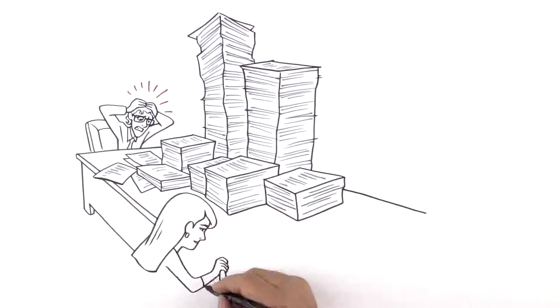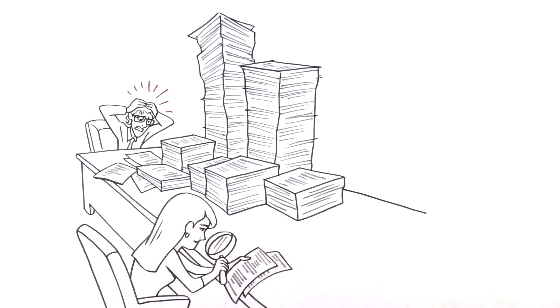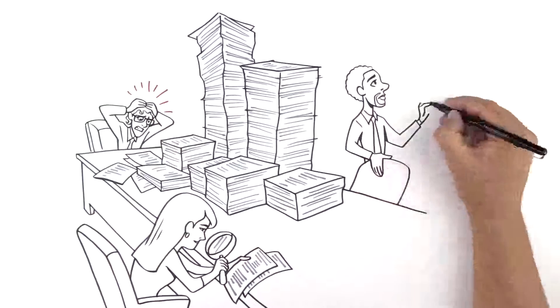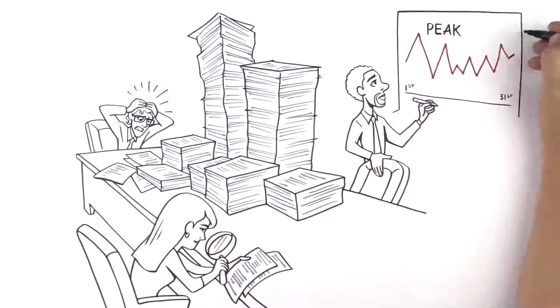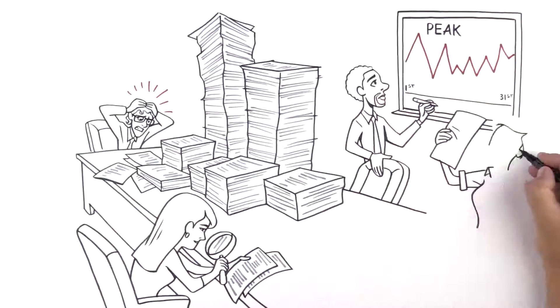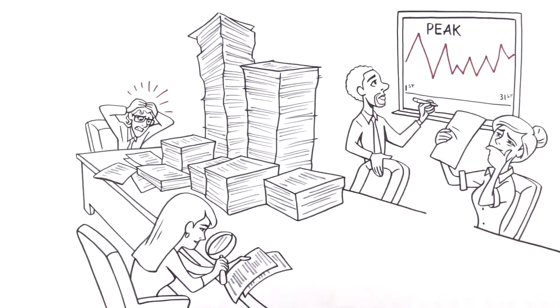The SCRT report you get is almost incomprehensible, and it doesn't tell you what drove your peak, making it extremely difficult to figure out how to reduce your MLC costs.